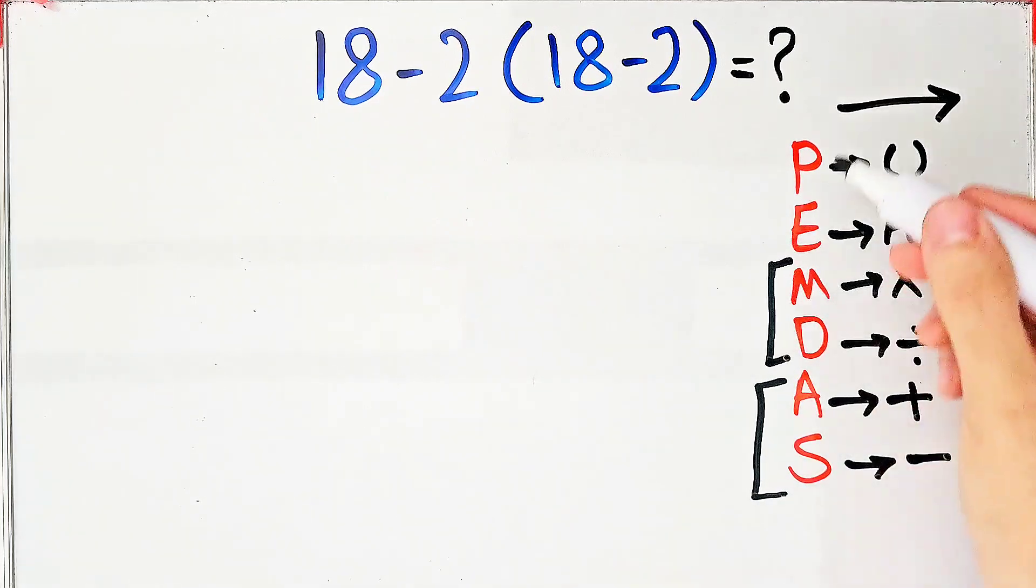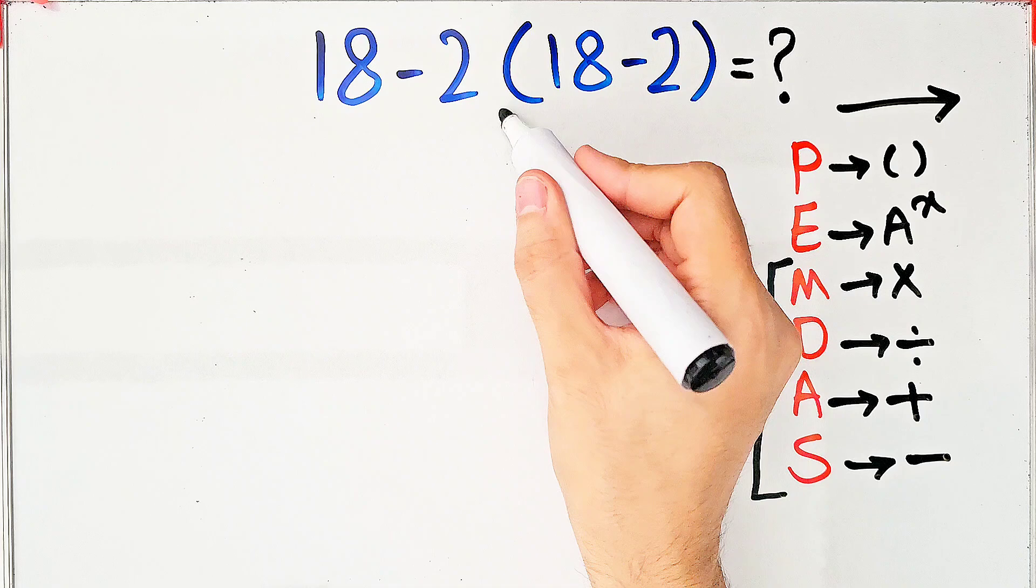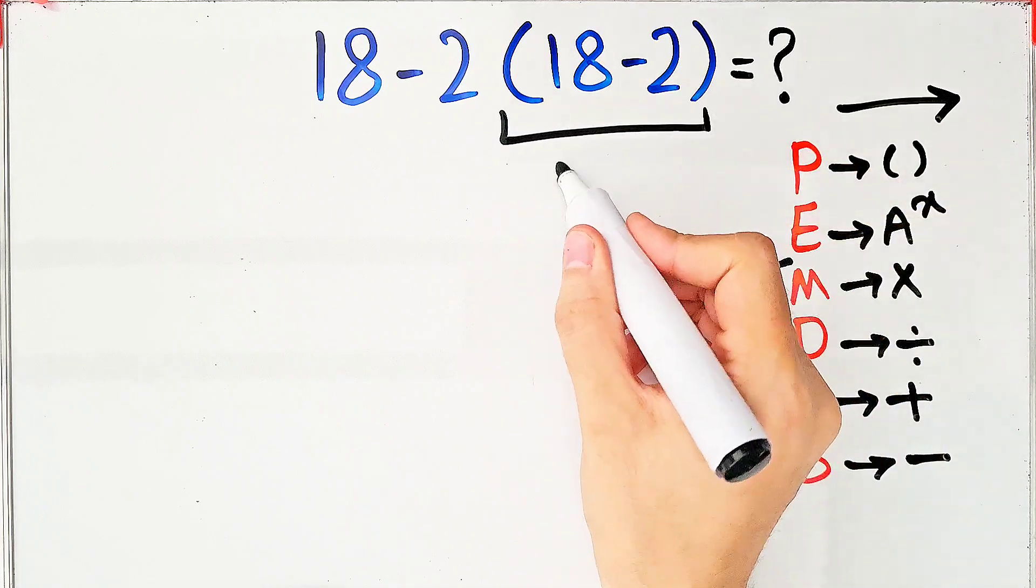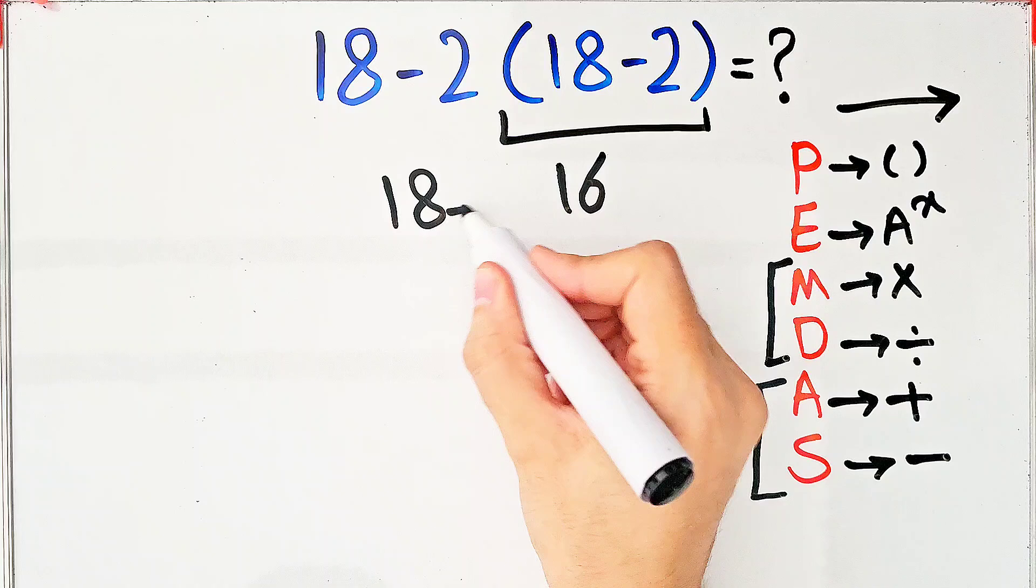According to the PEMDAS rule, first we simplify the parentheses. Inside the parentheses, we have 18 minus 2 which equals 16. Now the question is 18 minus 2 times 16.